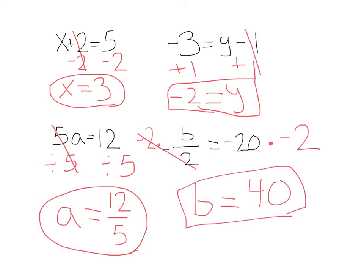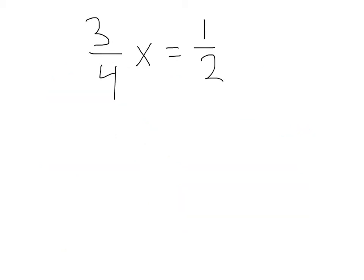Now notice, on any of these problems, if you're not sure if you got it right, you can plug in your answer back into the original equation. Here I have x equals 3. I could plug this in here, and I'd have 3 plus 2 equals 5, which is true. I've got negative 2 here, so negative 3 equals negative 2 minus 1. That's negative 3, so that's true. And you can do the same things with these. If you're not sure if you did it correctly, you can always just plug it back in to the variables.